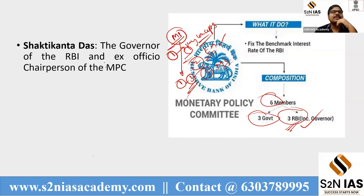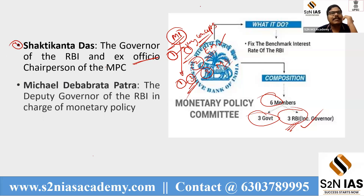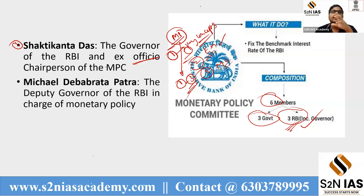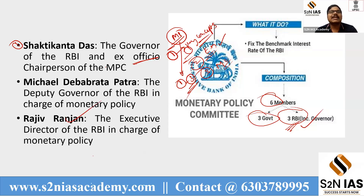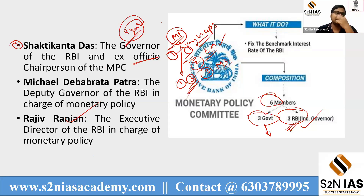The RBI Governor serves as ex-officio chair of the Monetary Policy Committee. The second RBI member is the Deputy Governor of the RBI, currently Michael Patra, who is in charge of monetary policy. The third RBI member is the Executive Director of the RBI in charge of monetary policy, currently Rajiv Ranjan. These three — Governor, Deputy Governor, and Executive Director — form the RBI side of the MPC. External members are selected for their expertise in economy and monetary policy-related fields, appointed by the government for a four-year term.